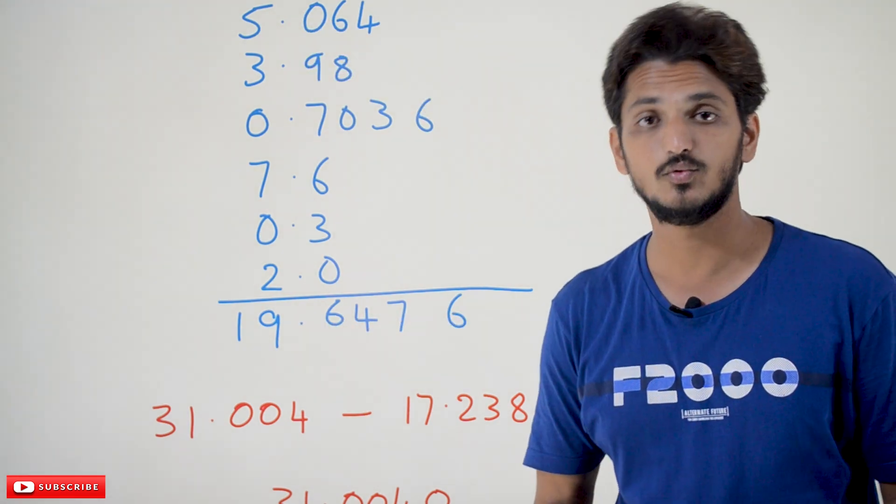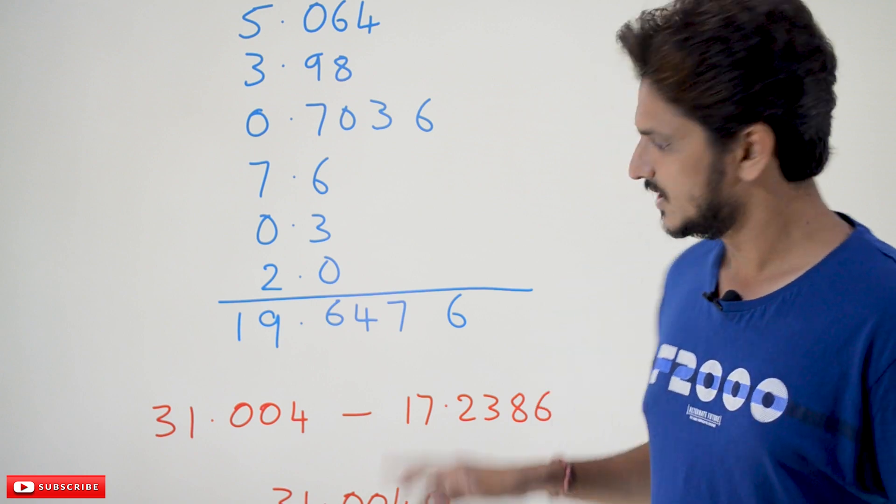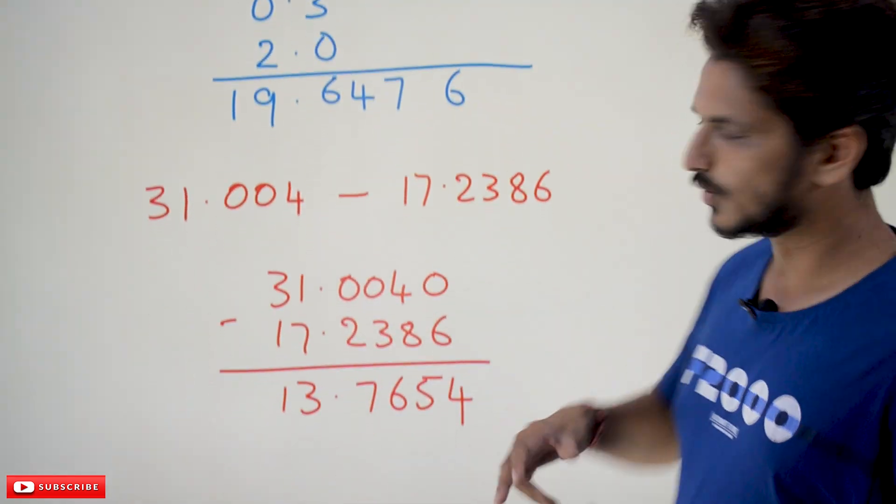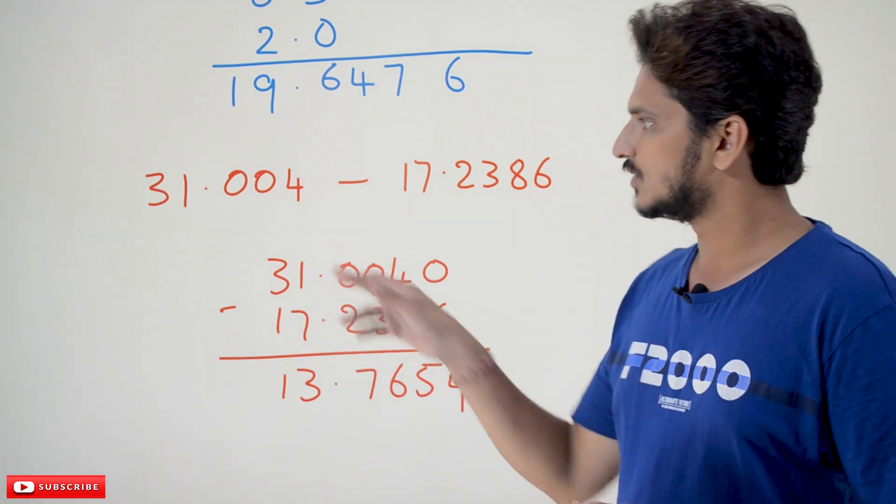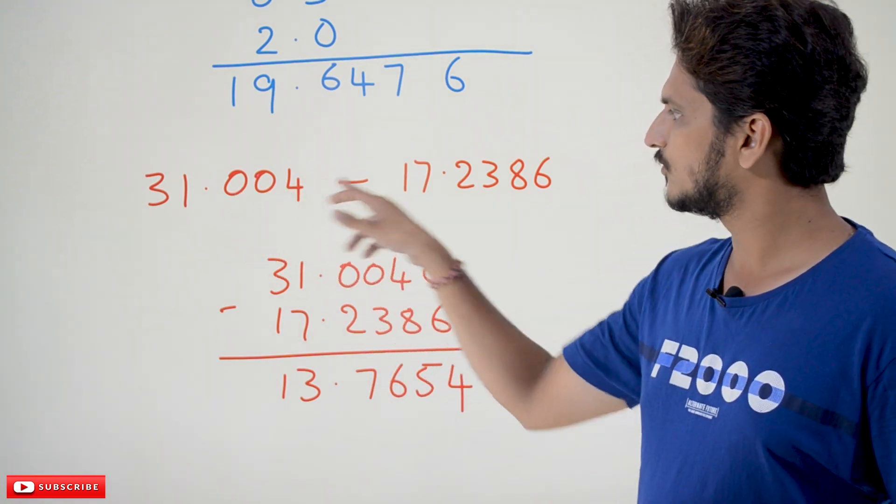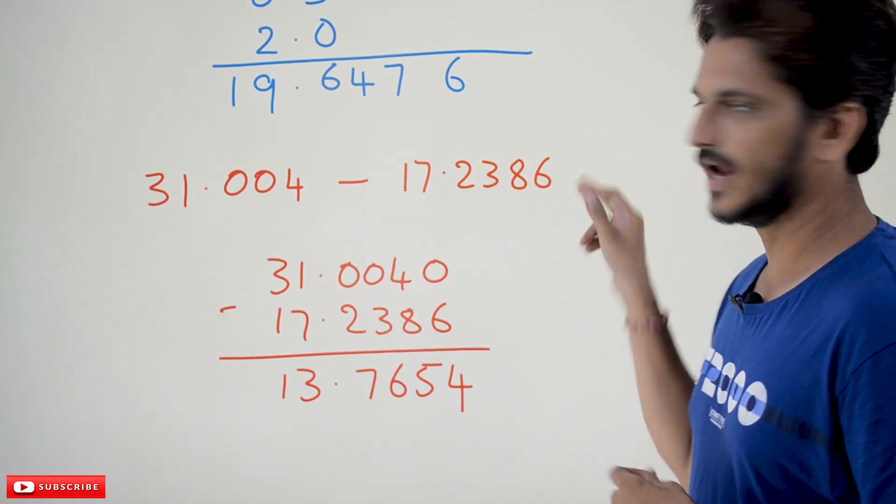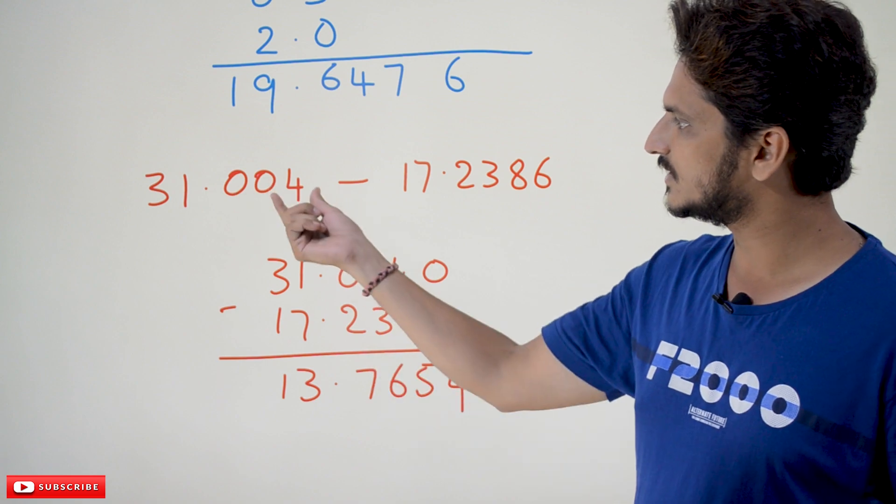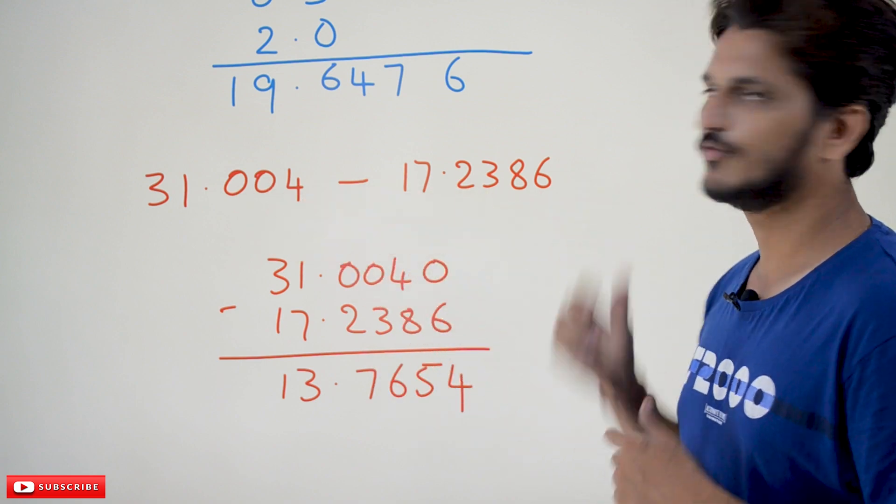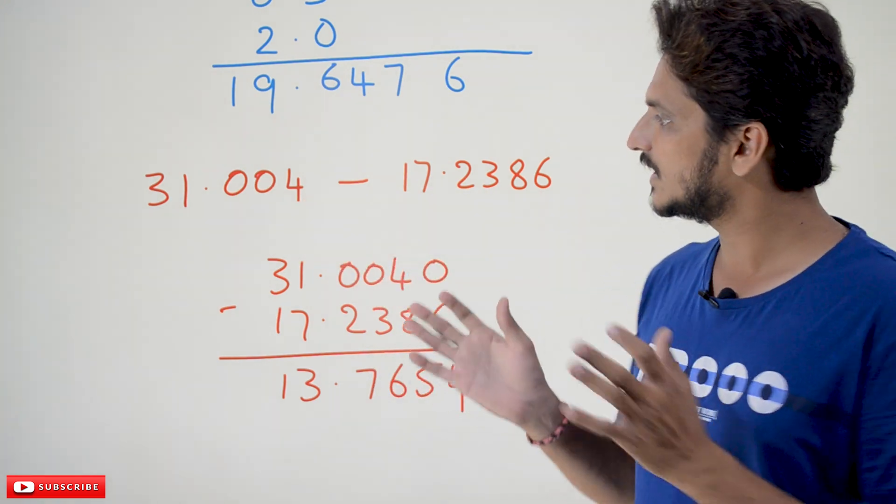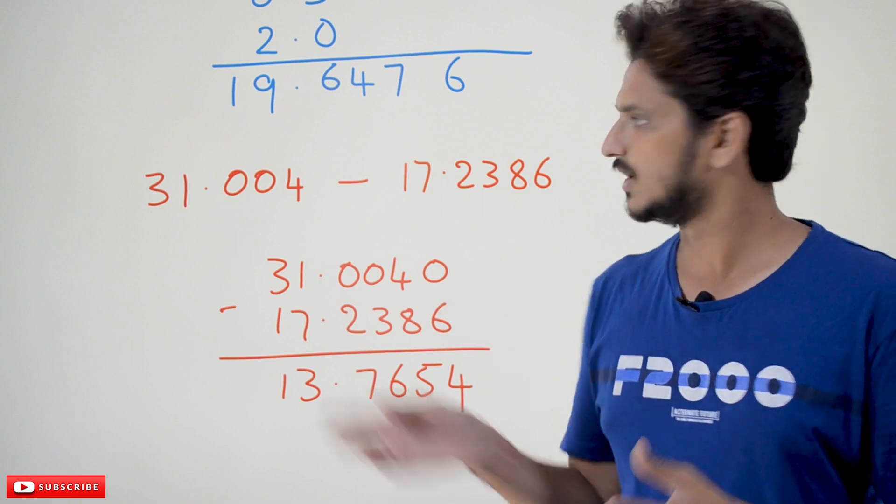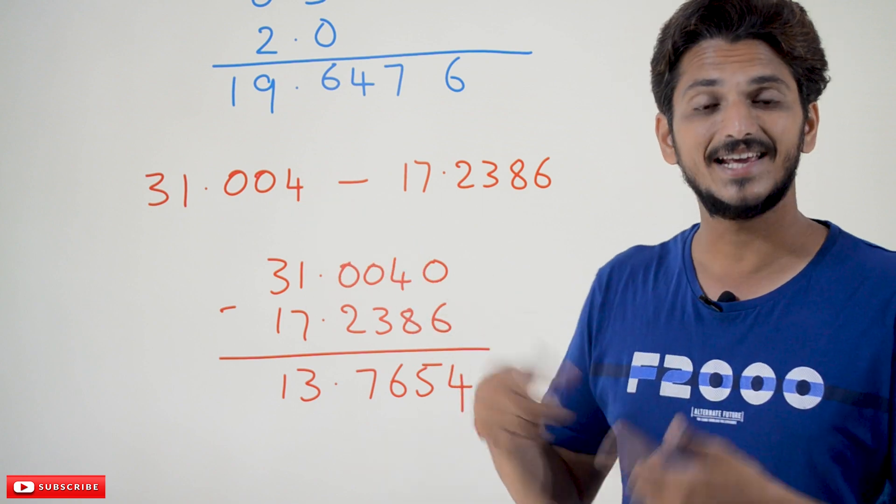Now let's do one example on subtraction. Subtraction is also similar, but one point you have to remember: 31.004 minus 17.2386. After the dot, how many digits are there? Three digits here, four digits there. So make equal number of digits after the dot. You can add 0 here; adding a 0 after the dot will not affect the number.